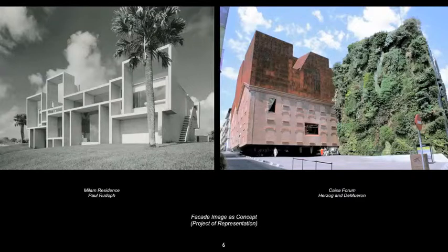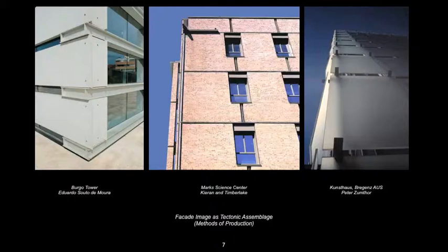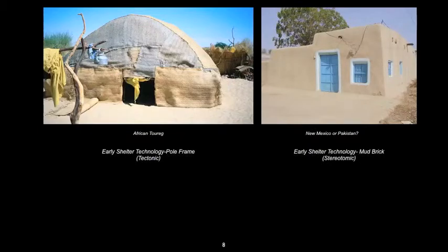In the book Surface Architecture, Leatherbarrow and Mostafabi outline two primary ways of understanding building image. The first is the project of representation, where building image is developed through concept regardless of the types of construction — the final building image is the primary concern and may often be at odds with normative construction tectonics. The second is the development of building image by the application of methods of production, where the final image is read as rational tectonics of construction rooted in a vernacular way of thinking.